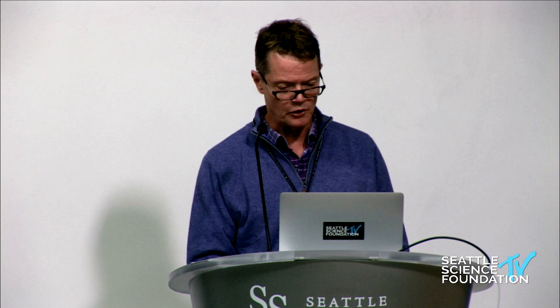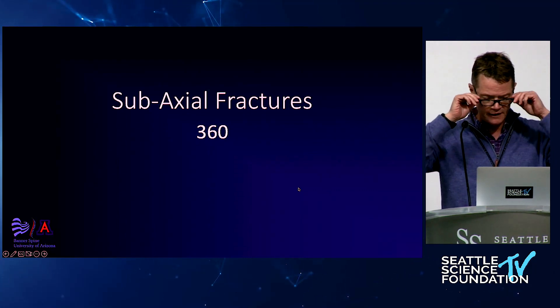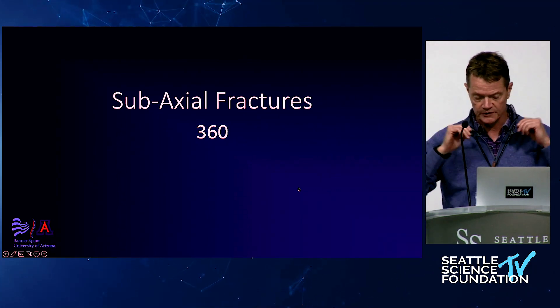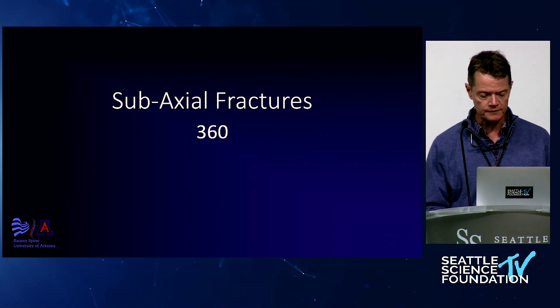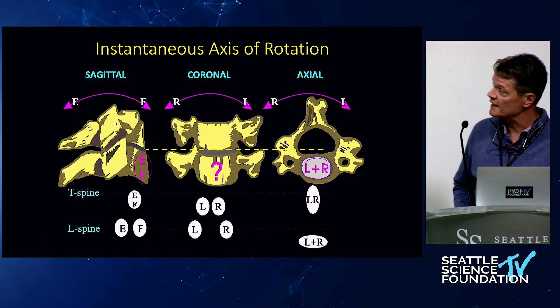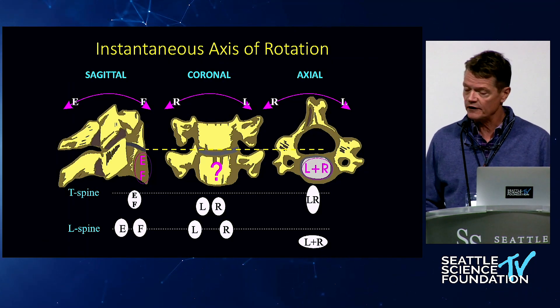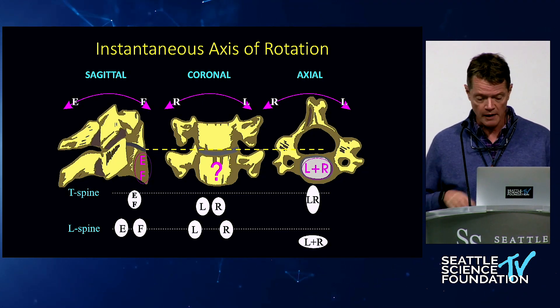I'm going to finish with some reflection on front-back C-spine surgery. When you think about subaxial fractures and 360-degree constructs, it becomes almost intuitive when a person needs a front-back approach. Leading into that, I want to remind everybody about the instantaneous axis of rotation — a fairly simple biomechanical concept but very applicable in trauma.